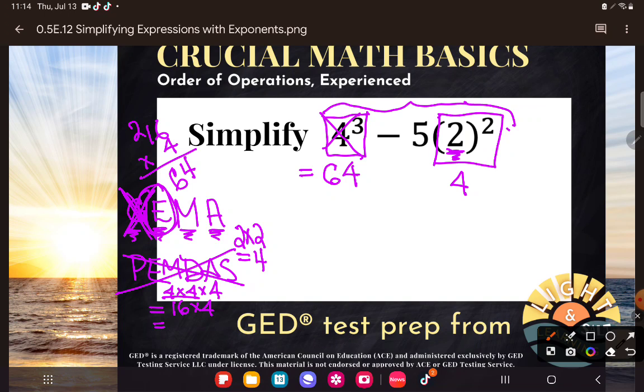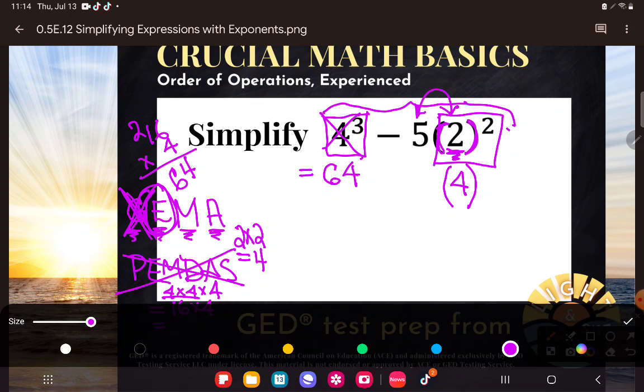Those parentheses there were communicating to us something. It wasn't a grouping. What was it? It was multiplication. We were saying that this thing was multiplying with the 5. And so we haven't done that multiplication yet. We are supposed to do exponents before multiplication. So those parentheses are still there, not telling us about a grouping, but telling us about an act of multiplication we haven't done yet.